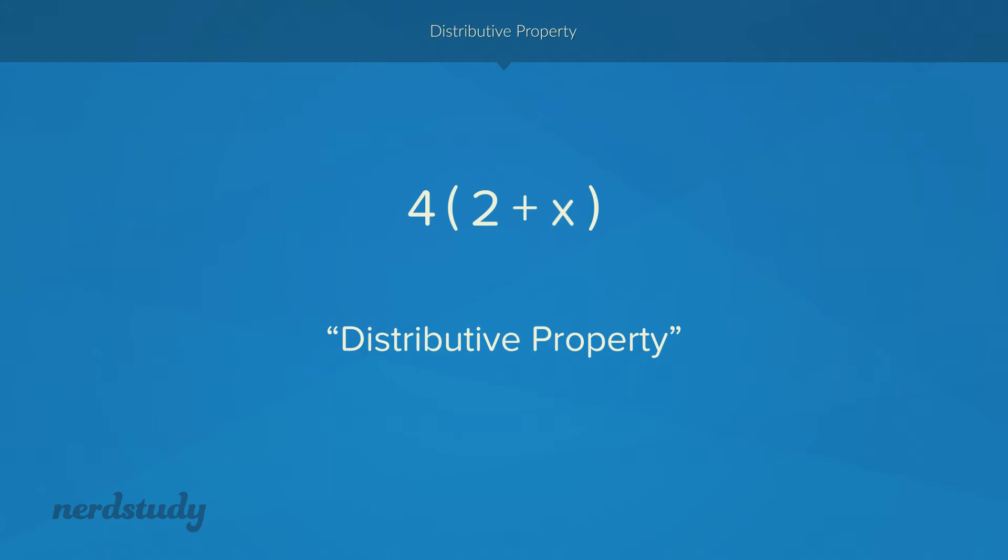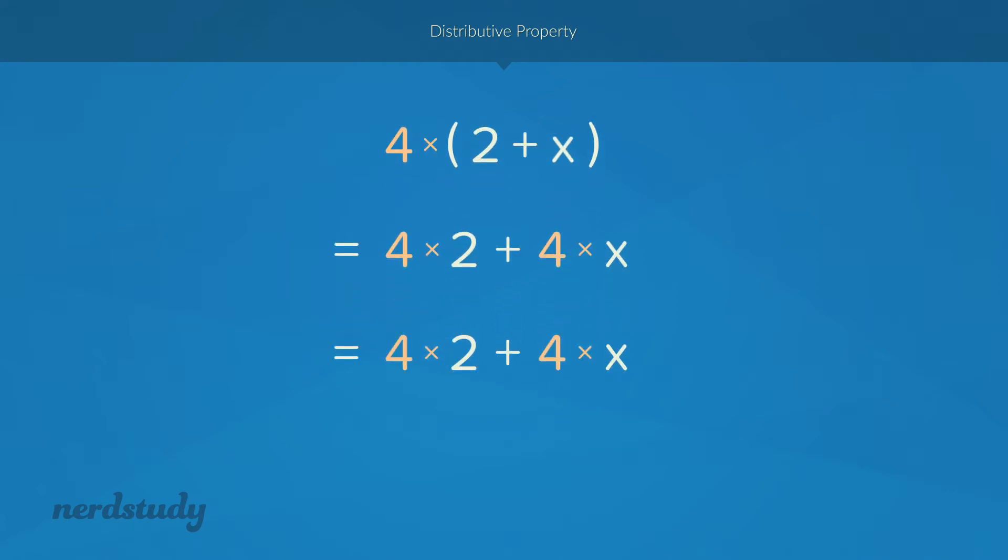So before we talk more about it, I'm just going to use the distributive property right now and you'll probably be able to pick up on the pattern of what's actually going on. So what we can do is 4 times 2 plus 4 times X. What we end up with is 8 plus 4X.